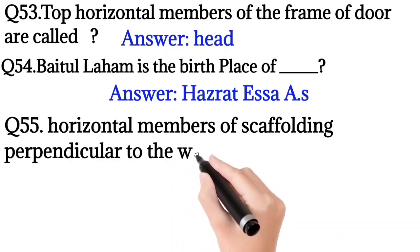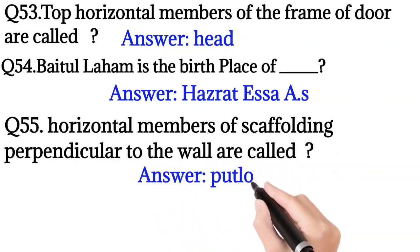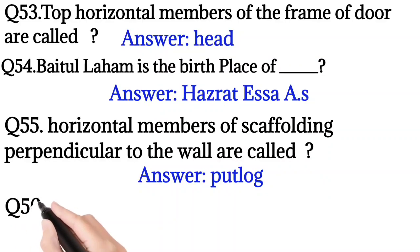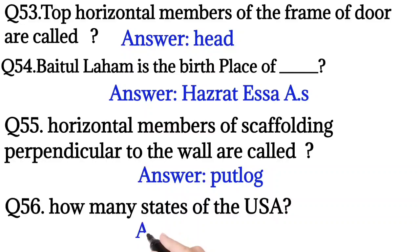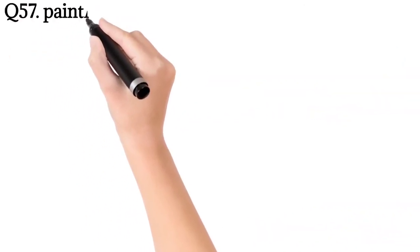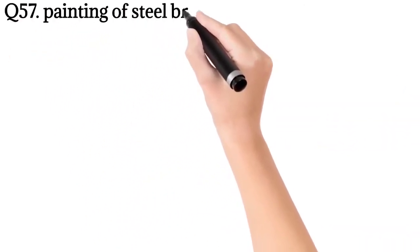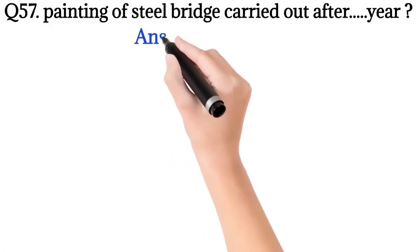Bricks laid perpendicular to the wall are called? So the answer is header. Question number 56: How many states of the USA? So the answer is 50. Question number 57: Painting of a steel bridge carried out after how many years?